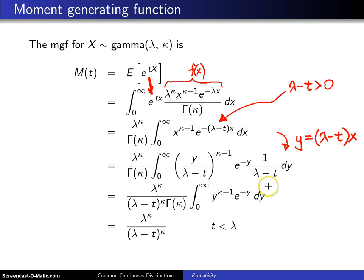Now as you look at that integral for a while, it might look familiar. That integral right there is the definition of gamma of kappa, the gamma function. So it will cancel with this denominator and we're just left with lambda to the kappa divided by lambda minus t to the kappa for t less than lambda.